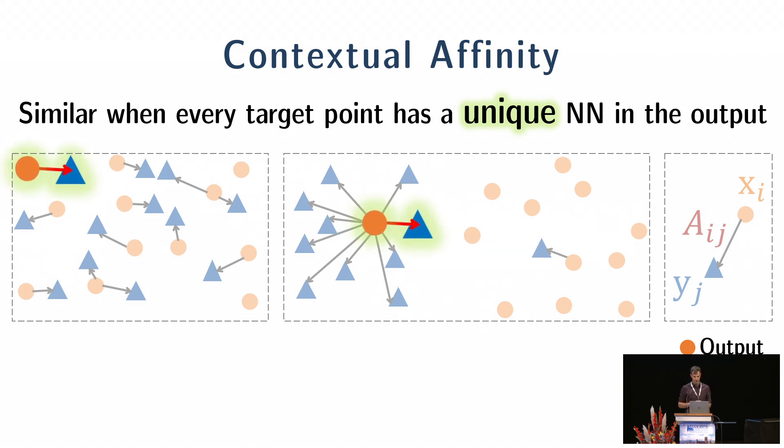It misses the fact that one-to-one match exists on the left and many-to-one match exists on the right. That is, it ignores the statistics of the image and it ignores the context of each point.